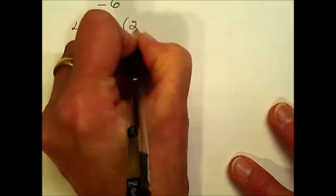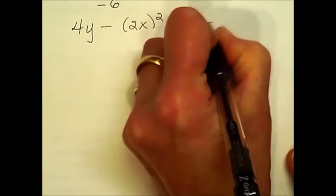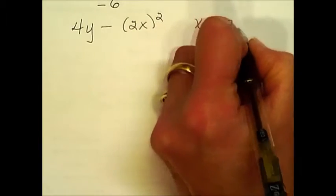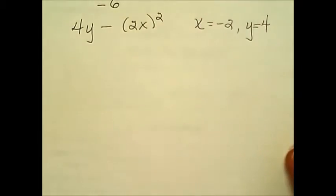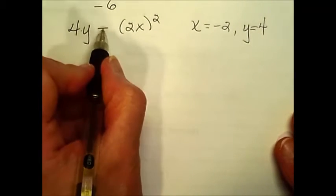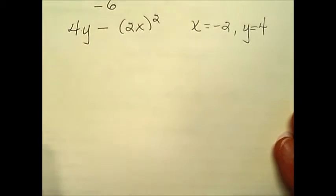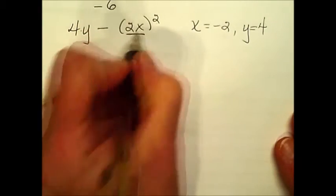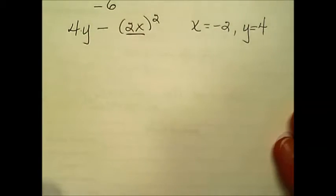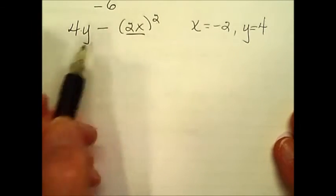If the problem is 4y minus 2x quantity squared, and they tell us that x is equal to a negative 2, and y is equal to a 4, order of operations. We have a multiplication, a subtraction, a multiplication within parentheses, and then an exponent. The priority is here to do the multiplication first because of the parentheses, then we'll square, multiply, and finally we will do the subtraction.